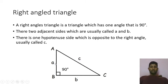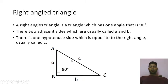In a right angle triangle there are two smaller adjacent sides, also called the legs of the triangle. These are usually denoted by A and B. There is also a larger side called the hypotenuse, which is denoted by C.